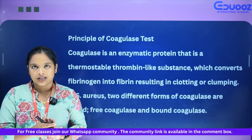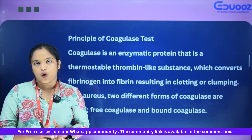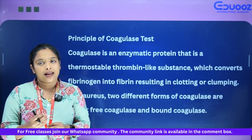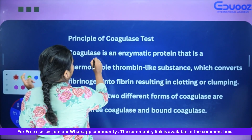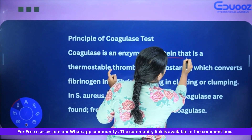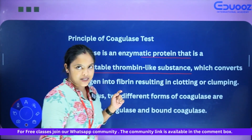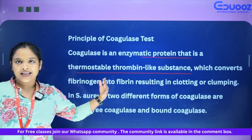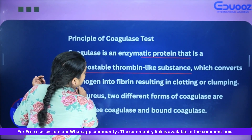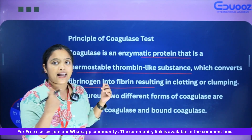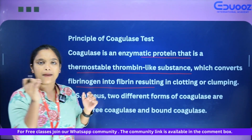Coagulase is an enzymatic protein. It is a thermostable, thrombin-like substance. It converts fibrinogen into fibrin, resulting in clotting and clumping formation. In the slide test there are clumps, and in the tube test there is clotting.